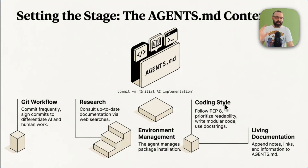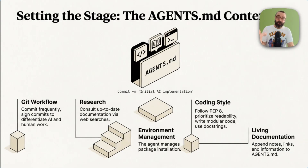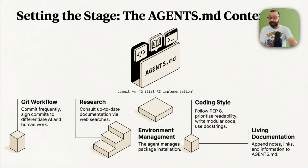In this markdown file, Eleanor specified the Git workflow — commit frequently, sign as AI — how to do research. When using Pydantic AI or Logfire, for example, get the AI to not rely on its weights but to search the internet and find the documentation. How to manage the environment, coding style. And remember, it's living documentation. This allows you to manage the context in a persistent markdown file, giving you visibility and control. Letting the agent do its own compaction and manage the context as part of the conversation obscures things and gives you less control.